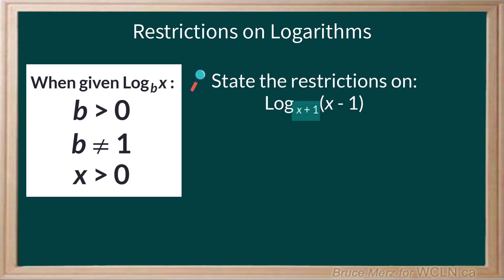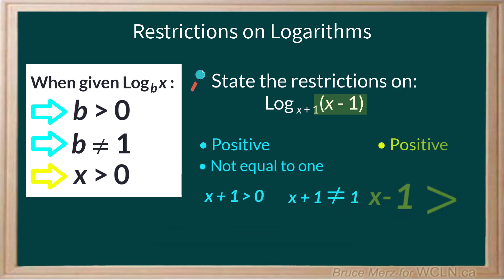So the base has to be positive but not 1. We can write that like this. x plus 1 must be greater than 0, and x plus 1 can't be 1. And the argument x minus 1 must also be positive, or x minus 1 is greater than 0.